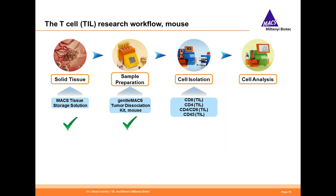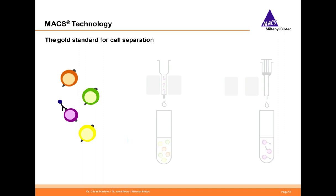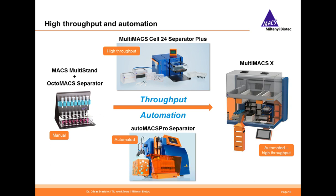Once we have a cell suspension, we improved the isolation of TILs by developing microbead reagents for the enrichment of CD8, CD4, pan T cells, or CD45-positive TILs directly from dissociated tumor tissue. Using these reagents, based on MACS technology, the dissociated tumor tissue is directly labeled with specific microbeads optimized for use in solid tumor. The microbead-labeled cells are then magnetically isolated, resulting in very efficient enrichment of the cells of interest. This process can be done manually using individual columns, automated using the AutoMACS Pro separator, or for high-throughput needs, the MultiMACS Cell 24 Separator Plus allows semi-automated isolation of up to 24 samples simultaneously. High-throughput cell isolation can also be fully automated using the MultiMACS EX, which incorporates a liquid handling system.